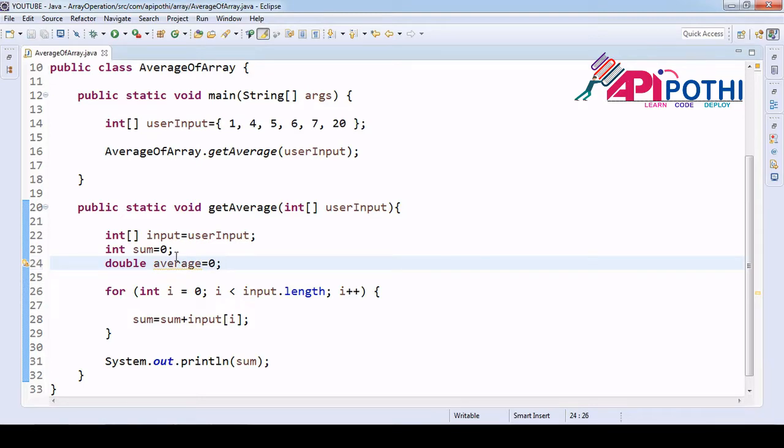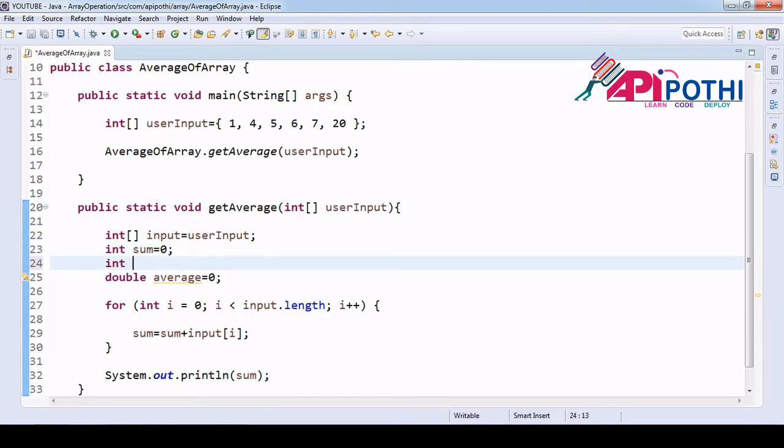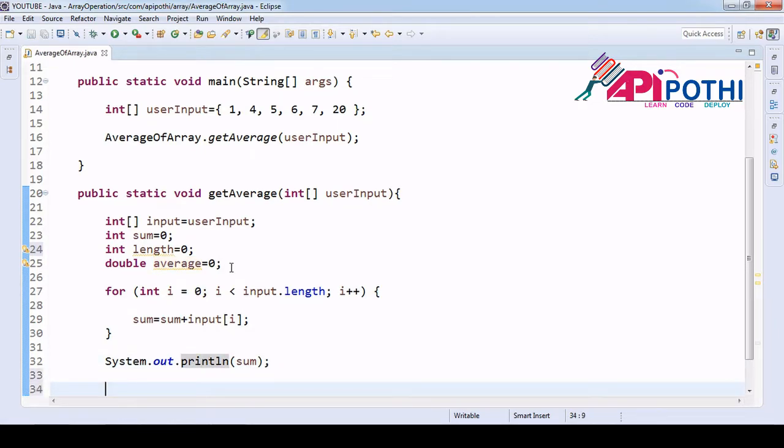To find the average we got the sum, and we need to have the total number of elements. Total number of elements is nothing but your length. Let's create another local variable, int length equals zero for now.